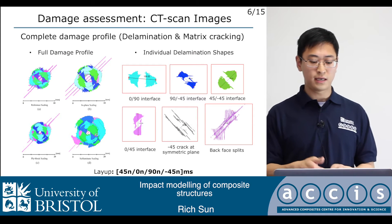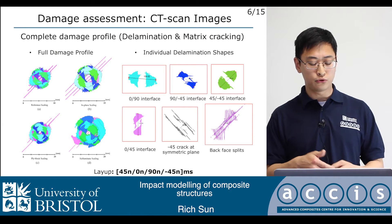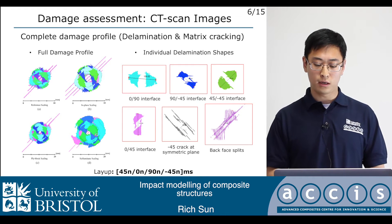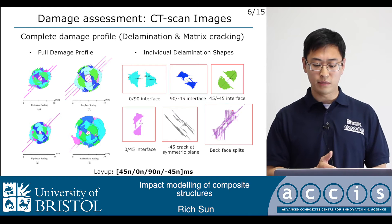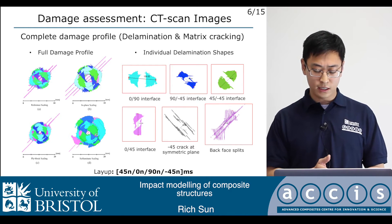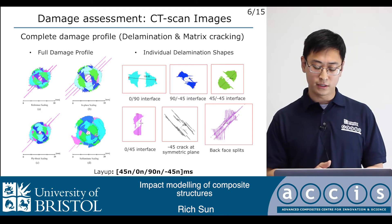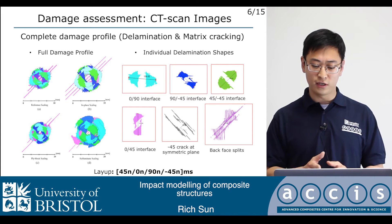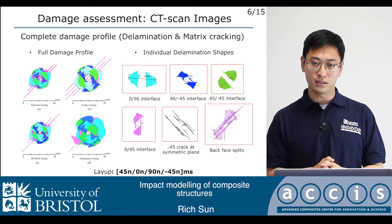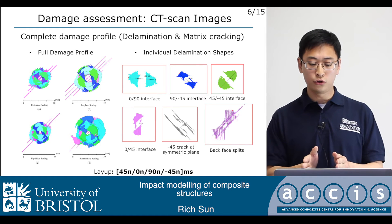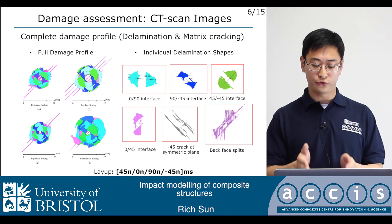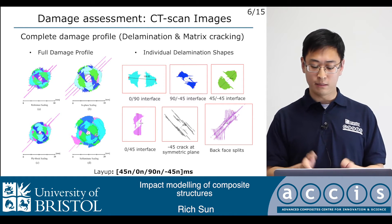From CT-scan we found it is capable of giving a full damage profile of delamination and matrix crack. We also found a strong interaction between delamination and matrix crack. Especially for 45-degree interface delamination, matrix cracks create stress concentrations at the ply level that physically interact with delamination and guide its propagation. This is the phenomenon we want to capture in our high fidelity model.